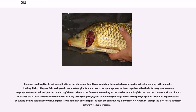Lampreys and hagfish do not have gill slits as such. Instead, the gills are contained in spherical pouches with a circular opening to the outside. Each pouch contains two gills. In some cases the openings may be fused together, effectively forming an operculum. Lampreys have seven pairs of pouches, while hagfishes may have six to fourteen, depending on the species. In the hagfish, the pouches connect with the pharynx internally. Lungfish larvae also have external gills, as does the primitive ray-finned fish Polypterus, though the latter has a structure different from amphibians.